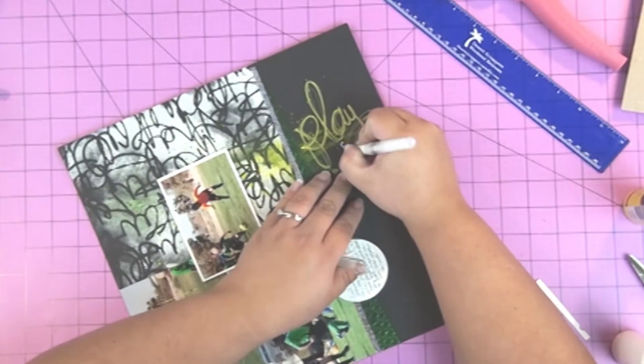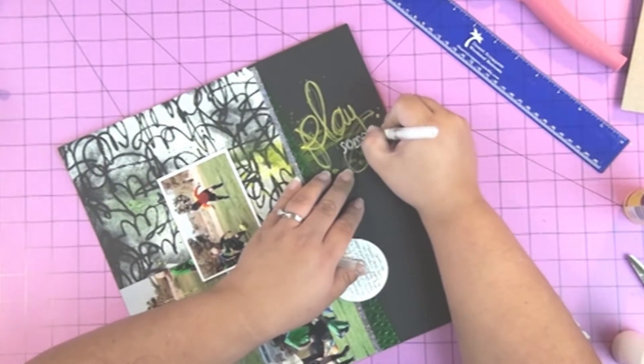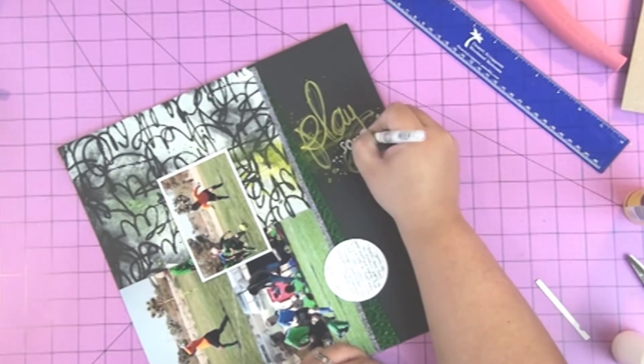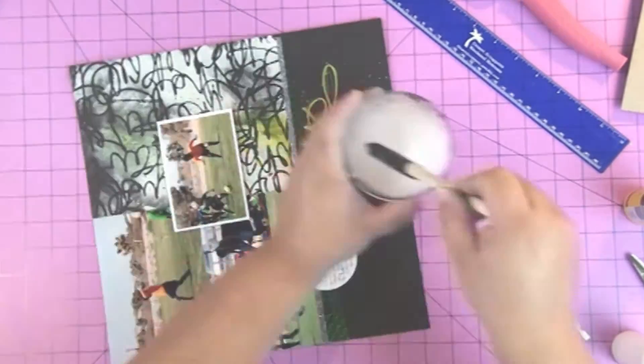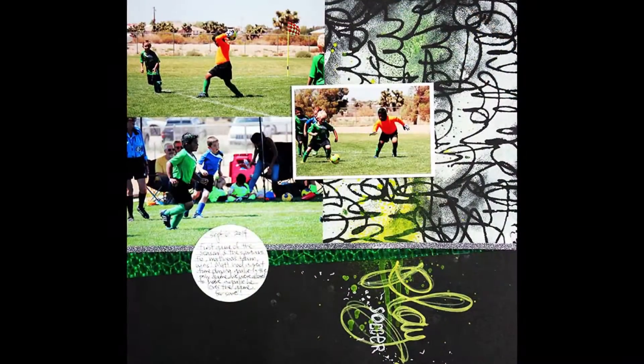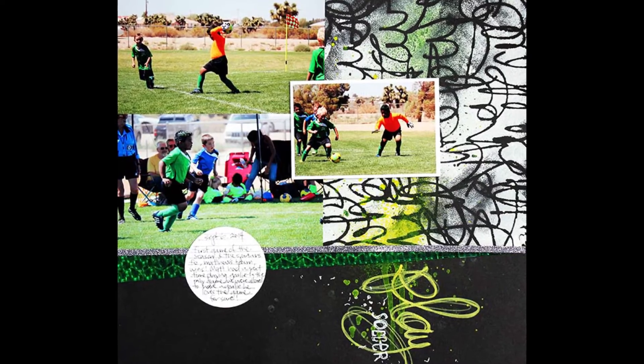Glued that down with my ATG gun and then I used a white pen to add in kind of some graffiti writing the word soccer. Drew a few little doodles and then I used some of the paint that was left on the foam brush to add some more splatters. Again, blotted that with a paper towel and let it dry and there you have it.